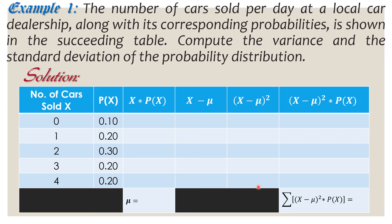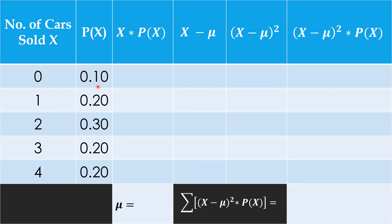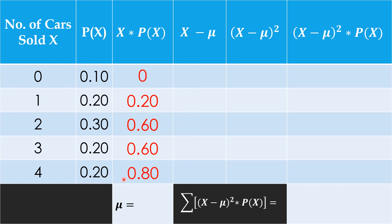To illustrate, example number one: the number of cars sold per day at a local car dealership along with corresponding probabilities is shown in the table. Compute the variance and the standard deviation of the probability distribution. Here is the probability distribution table with all columns included. The third column is x times P(x), used to compute the population mean. Multiplying: 0 times 0.10 is 0, 1 times 0.20 is 0.20, 2 times 0.30 is 0.60, 3 times 0.20 is 0.60, 4 times 0.20 is 0.80. Adding these up gives 2.2 — this is our population mean.